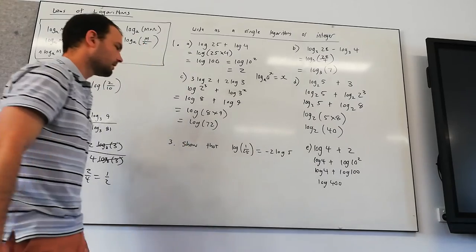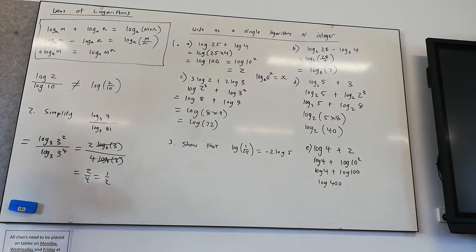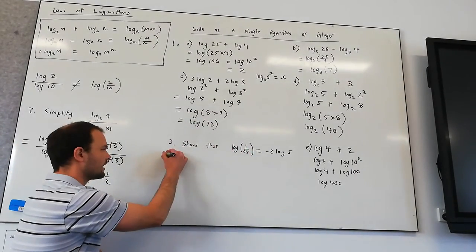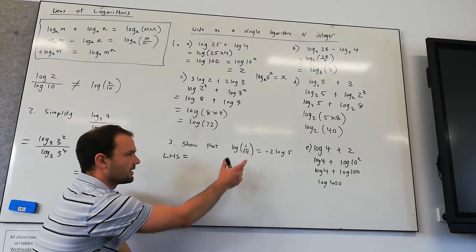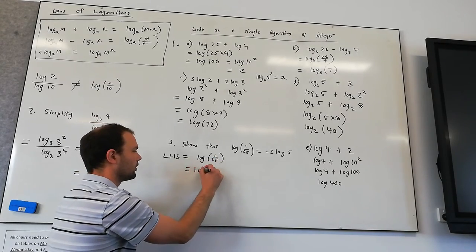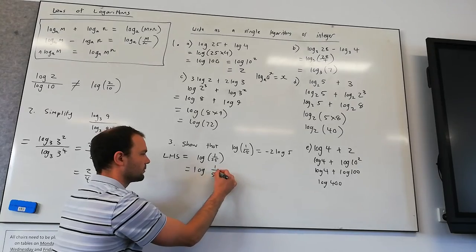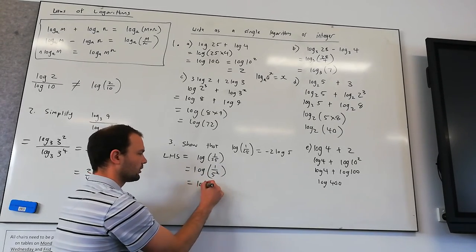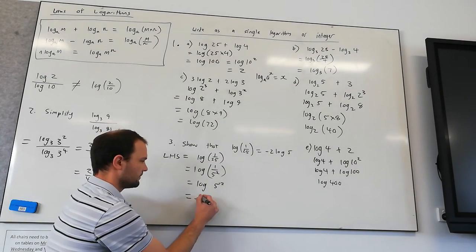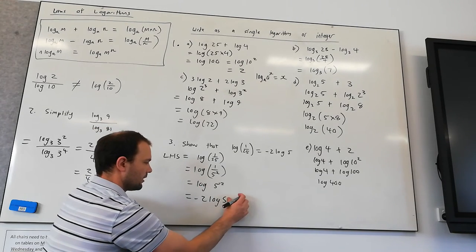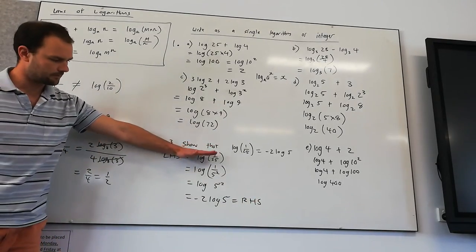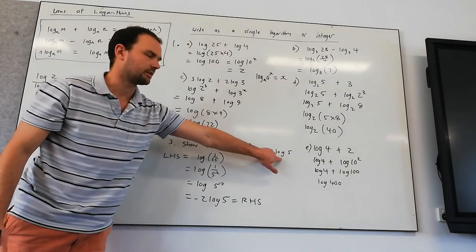Show that log of 1 on 25 equals minus 2 log of 5. So now we're getting into some proofs. So the way we're going to do it, there's a couple of ways. But we're just going to start with what's called the left-hand side. And the left-hand side is what we've got written here. That's log of 1 on 25. And we're going to say that equals log of 1 on 5 squared, which is log of 5 to the minus 2, which is minus 2 log 5. We can bring that power out the front. Minus 2 log 5, which is the right-hand side. So we've started with the left-hand side and we've simplified it and we've got what they wanted us to show that it's equal to.